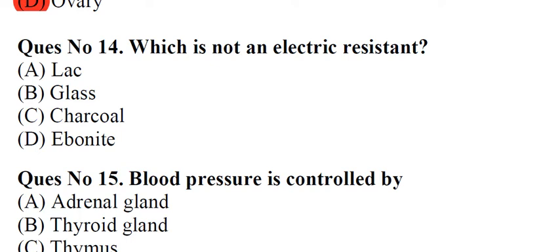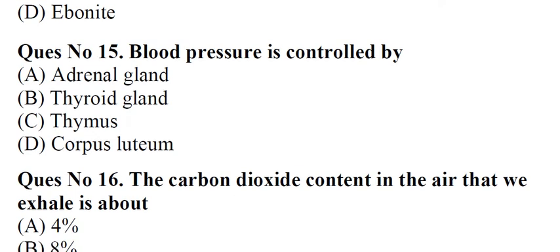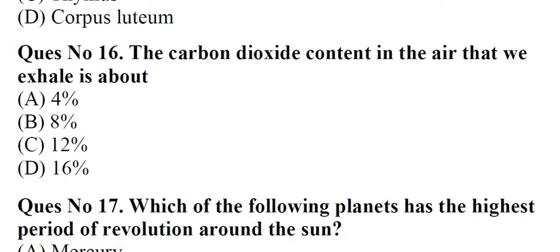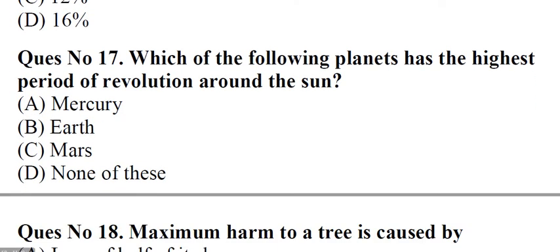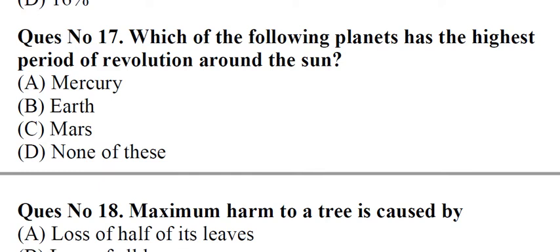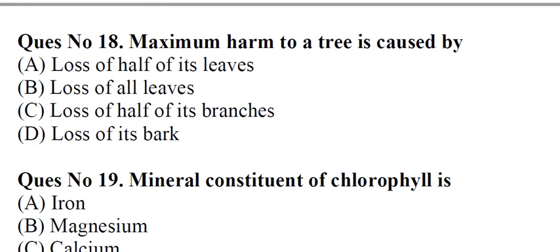Question number 14: Which is not an electric resistant? A. Lack B. Glass C. Charcoal D. Ebonite. Answer: C. Charcoal. Question number 15: Blood pressure is controlled by A. Adrenal gland B. Thyroid gland C. Thymus D. Corpus luteum. Answer: A. Adrenal gland. Question number 16: The carbon dioxide content in the air that we exhale is about A. 4% B. 8% C. 12% D. 16%. Answer: A. 4%. Question number 17: Which of the following planets has the highest period of revolution around the sun? A. Mercury B. Earth C. Mars D. None of these. Answer: D. None of these.